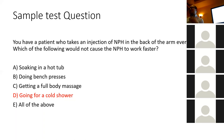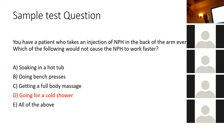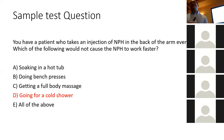Soaking in a hot tub increases circulation. Doing bench presses is a tricep exercise that increases circulation. A full-body massage also increases circulation. A cold shower would reduce circulation, which is why it's the answer to that 'not' question. On the exam there are lots of 'not' questions, and they trip up many students. When you see a 'not' question, circle the word 'not' so you remember it's asking for the opposite — it's asking which one will not increase absorption speed.